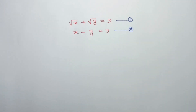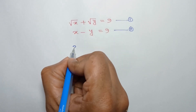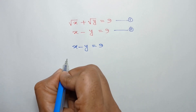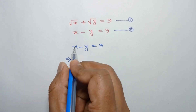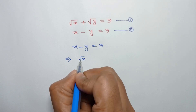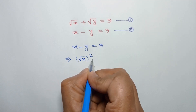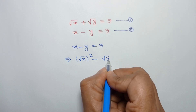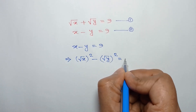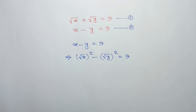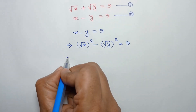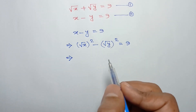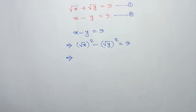From equation 2, we can write x minus y is equal to 9. We can rewrite x as square root of x whole squared, and y as square root of y whole squared, so square root of x whole squared minus square root of y whole squared is equal to 9. Applying the formula a squared minus b squared equals a plus b times a minus b.